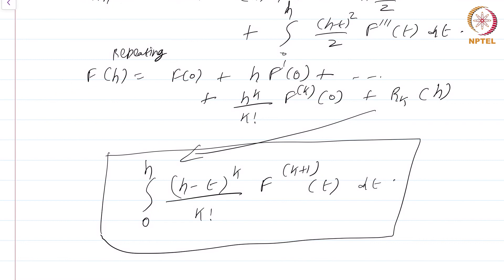The Lagrange form of the remainder involved an unknown quantity we cannot determine, whereas this integral is more tractable. For example, when writing the series for sin x or cos x — which we will do in a few modules — we know that f^(k+1)(t) will be either ±sin(t) or ±cos(t), so the integrand is fully known. With the Lagrange form, the remainder involves an unknown point between 0 and h.